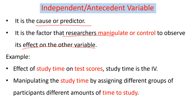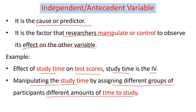Let's take one example: the effect of study time on test scores. Study time is obviously the independent variable, which does not depend on the other variable — rather, it affects the test scores. By manipulating the independent variable, that is study time, by assigning different groups of participants different amounts of time to study, we can observe the variation of test scores as a result of the independent variable.